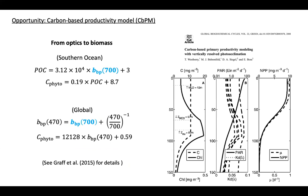There are different ways to estimate phytoplankton carbon biomass using float information. In the Southern Ocean, we can use local relationships between particulate organic carbon (POC) and the backscattering coefficient at 700 nm, and then again local relationships to estimate phytoplankton carbon from POC. For more global studies, we can convert the backscattering coefficient from 700 nm to 400 and 470 nm, and then use globally constrained relationships between phytoplankton biomass and bbp at 470 nm to estimate phytoplankton carbon biomass.